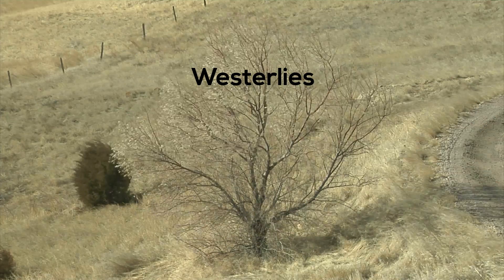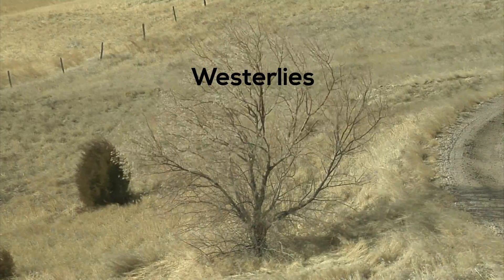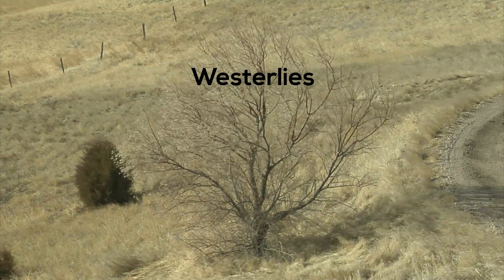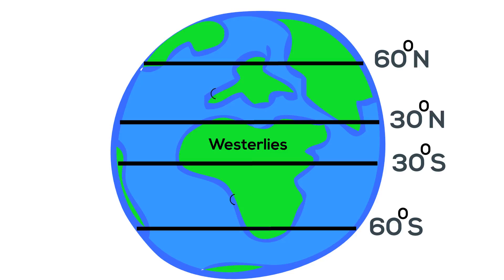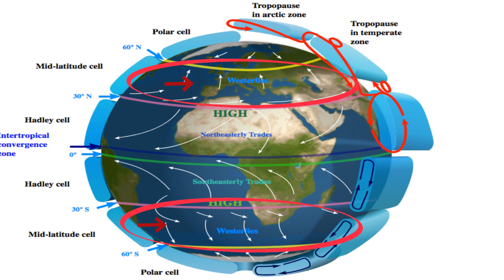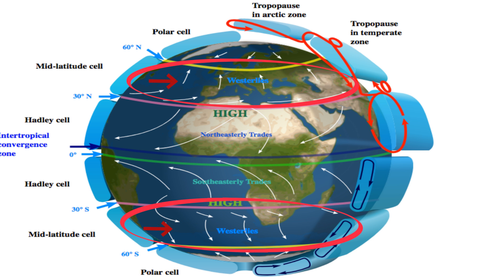Next are the westerlies, and they blow to the west. These wind belts are found between 30 degrees and 60 degrees latitude in both hemispheres, and are called the westerlies. The westerlies flow towards the poles from west to east. The westerlies can carry moist air over the United States, producing rain and snow.